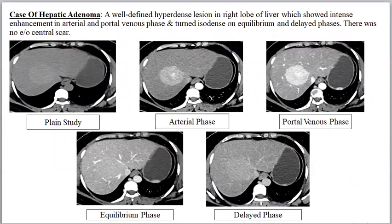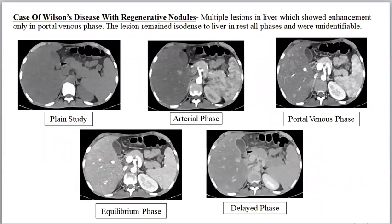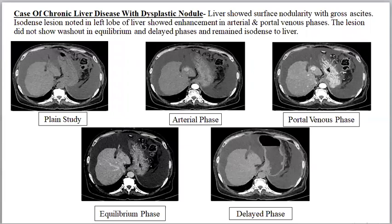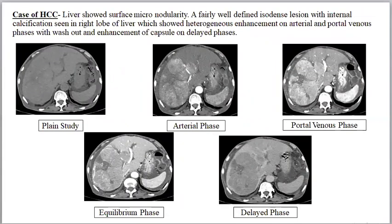A case of hepatic adenoma showed a well-defined hyperdense lesion in the right lobe with intense enhancement in arterial and portal venous phases, turning isodense on equilibrium and delayed phases, with no central scar. A case of Wilson's disease with regenerative nodules showed multiple lesions that enhanced only in the portal venous phase and remained isodense in all other phases. In a case of chronic liver disease with dysplastic nodule, an isodense lesion in the left lobe showed enhancement in arterial and portal venous phases without washout in equilibrium and delayed phases. In a case of HCC, the liver showed surface micronodularity with a fairly well-defined isodense lesion with internal calcification showing heterogeneous enhancement on arterial and portal venous phases with washout and capsular enhancement on delayed phases.